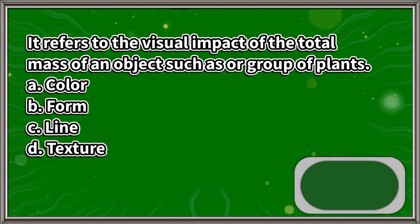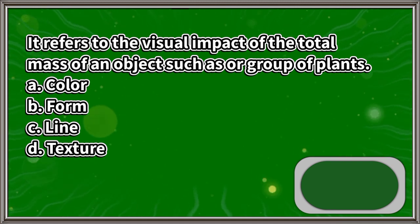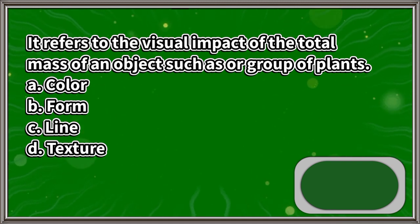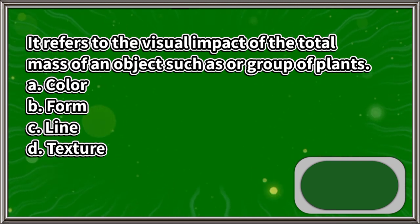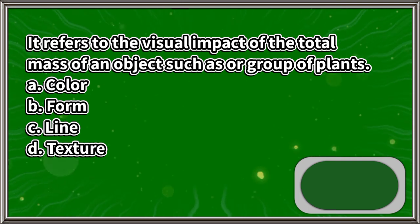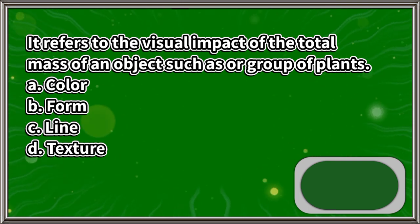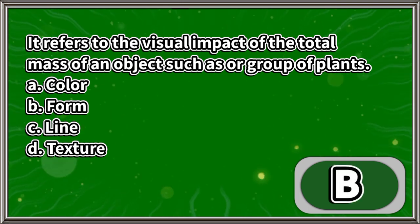It refers to the visual impact of the total mass of an object, such as a plant or group of plants: A. Color, B. Form, C. Line, D. Texture. The answer is letter B.